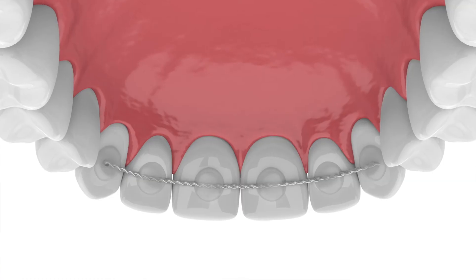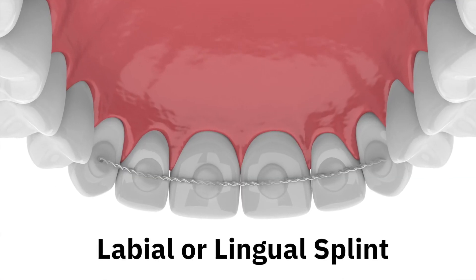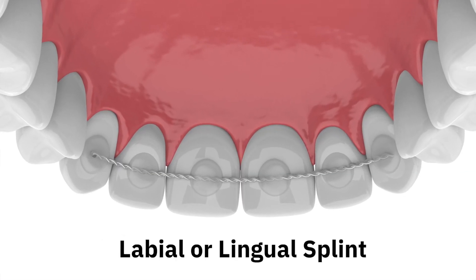For treatment, reposition the tooth by reinserting it into the socket, verify final placement with a radiograph, and place a flexible splint for two weeks. Monitor the pulpal condition, and if the pulp has not revascularized within three months, complete root canal therapy. For patient instructions and follow-up, refer to the dental trauma guide.